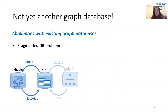The first problem is the fragmented DB problem. Most of today's graph databases are standalone — they only handle graph queries very well. But real applications often have mixed workloads containing SQL, graph, machine learning, and others. In order to support a heterogeneous workload, the developers have to move data around different systems.